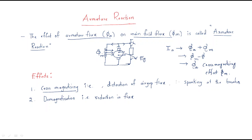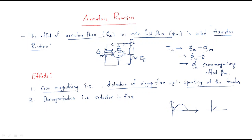The first effect is cross magnetizing, which means distortion of the air gap flux, and due to that we get sparking at the brushes. For example, without cross magnetizing the air gap fluxes are in one direction, but due to cross magnetizing the air gap fluxes get distortion — the shape changes completely — and we get sparking at the brushes.